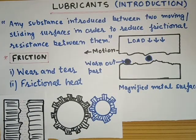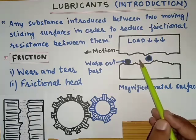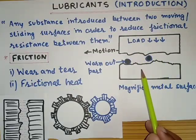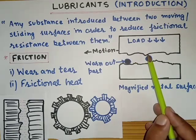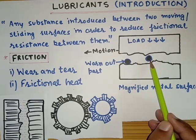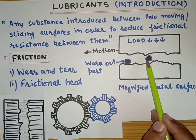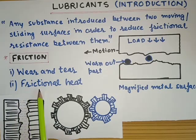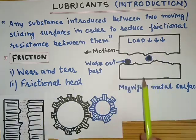A similar phenomenon takes place in metals also. When two metals slide past one another, the outer grooves of the metal are broken down, leading to damage to the metal as well as to the machinery. These worn-out parts may get entrapped between the sliding surfaces, leading to further damage to the metal.